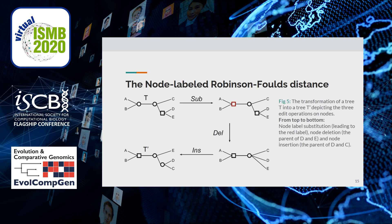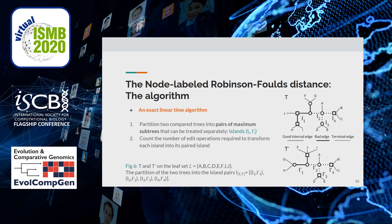The mechanisms of the operations on nodes are depicted and described in Figure 5. To compute this metric, we developed an exact linear time algorithm. The algorithm can be described at a high level in two steps. The first step partitions the two compared trees into pairs of maximum subtrees that can be treated separately, called islands. The second step counts the number of edit operations required to transform each island into its paired island.